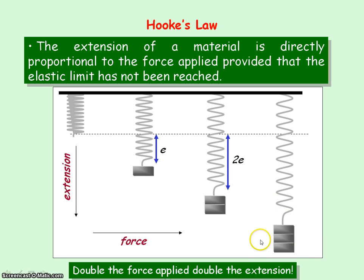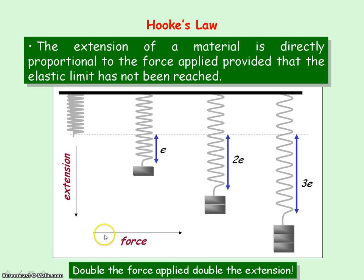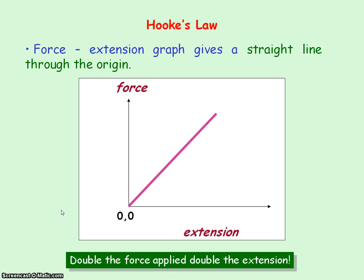If we apply three times the mass to the spring — so three times the force — as they increase by the same ratio, we'll have three times the extension. Horizontally we're increasing the force, and vertically you can see we get an increase in the extension. If we were to plot a graph of force against extension, we'll get a straight line through the origin — a feature of a directly proportional relationship.